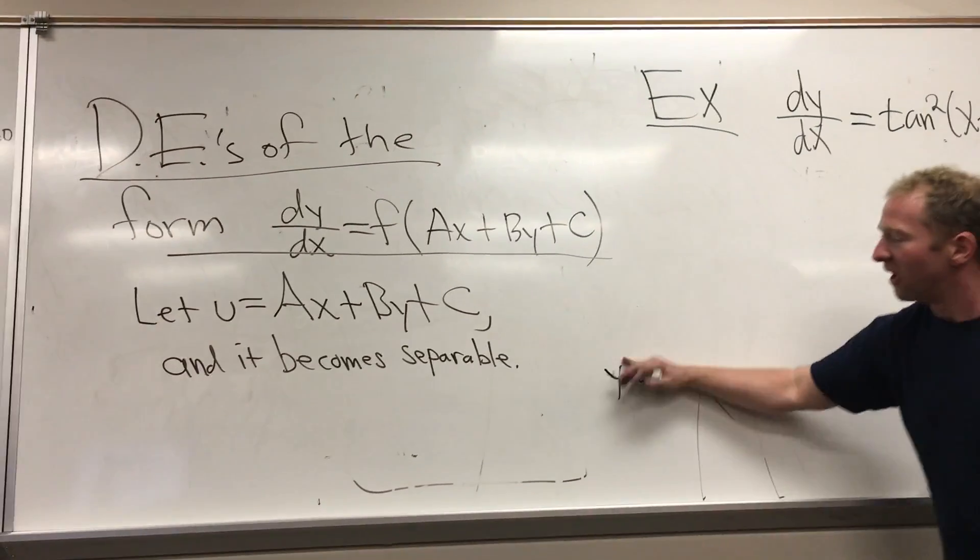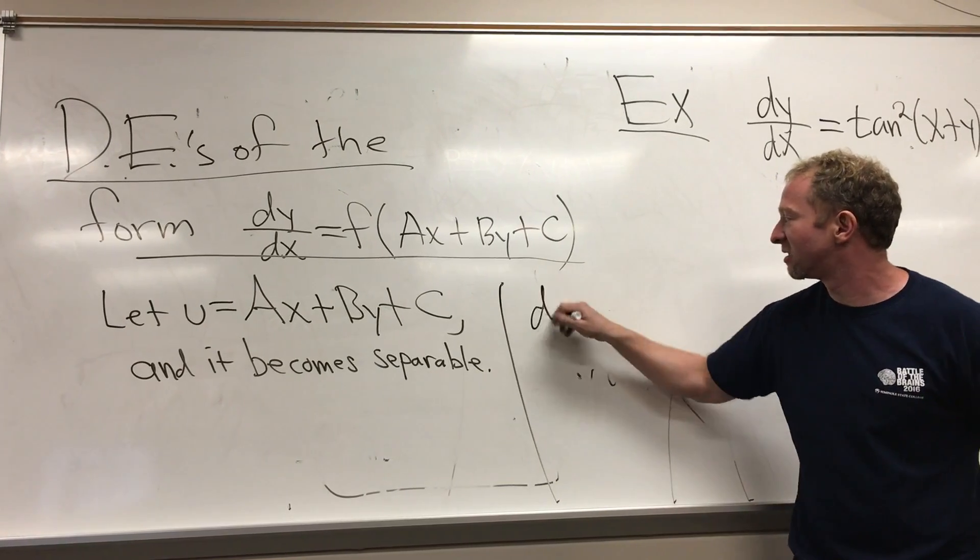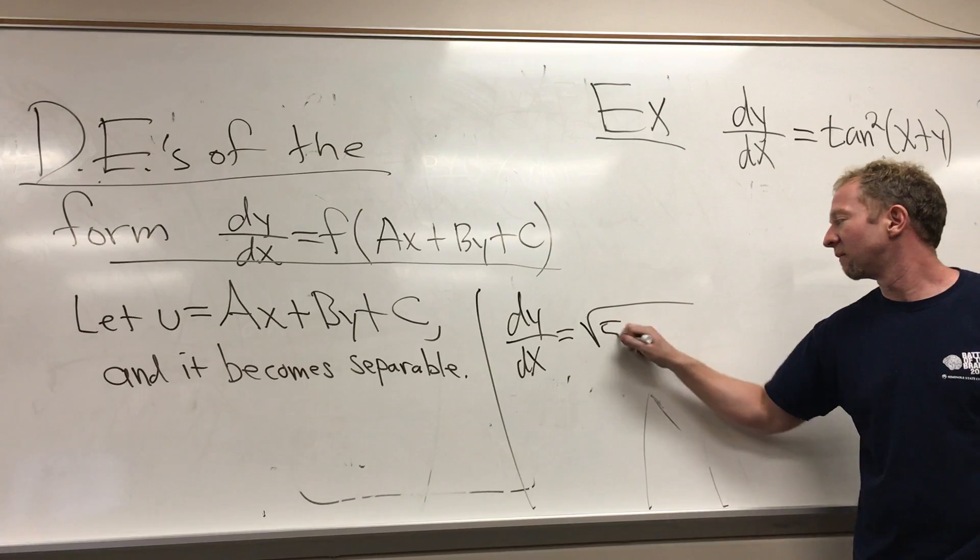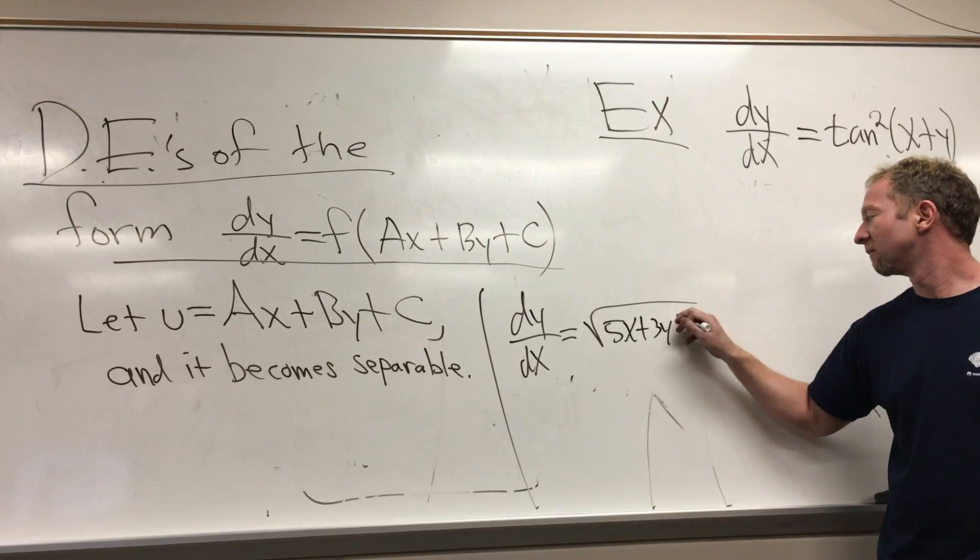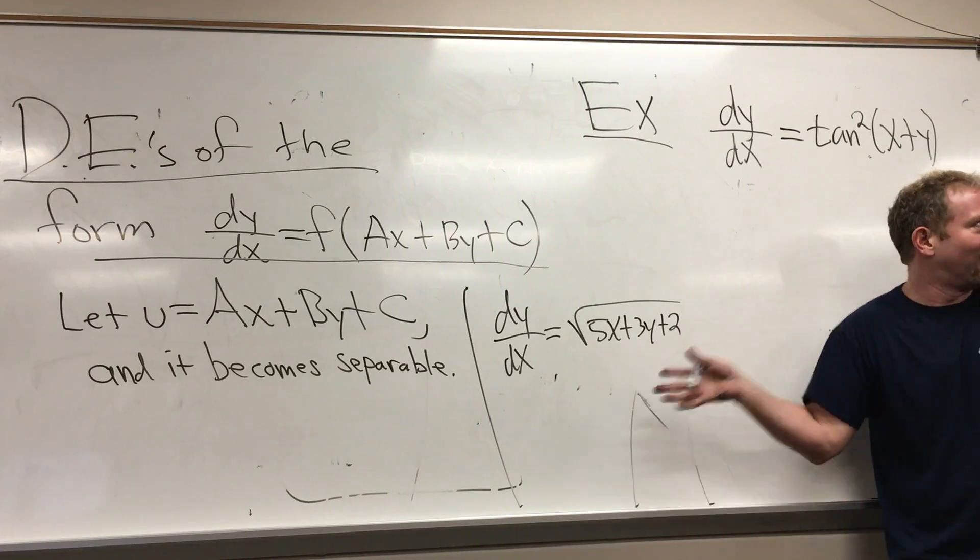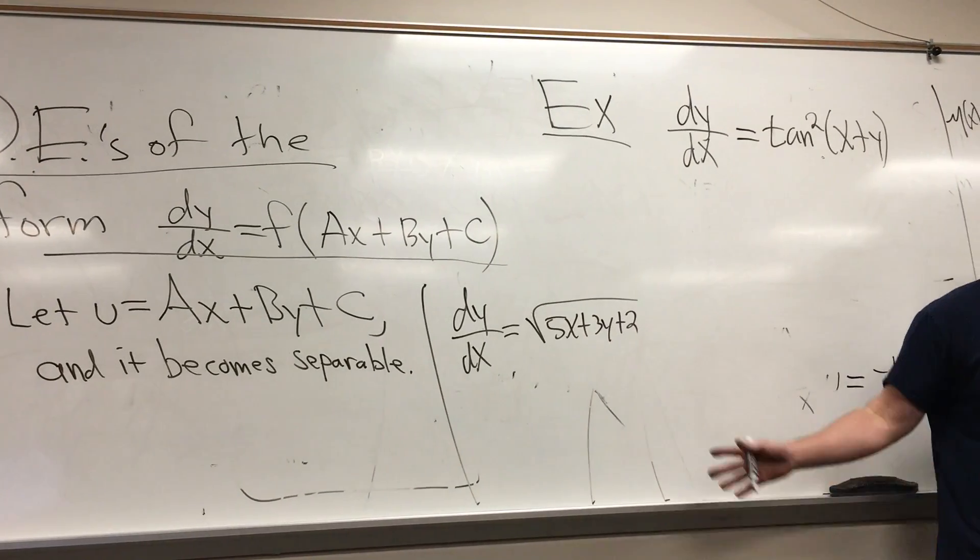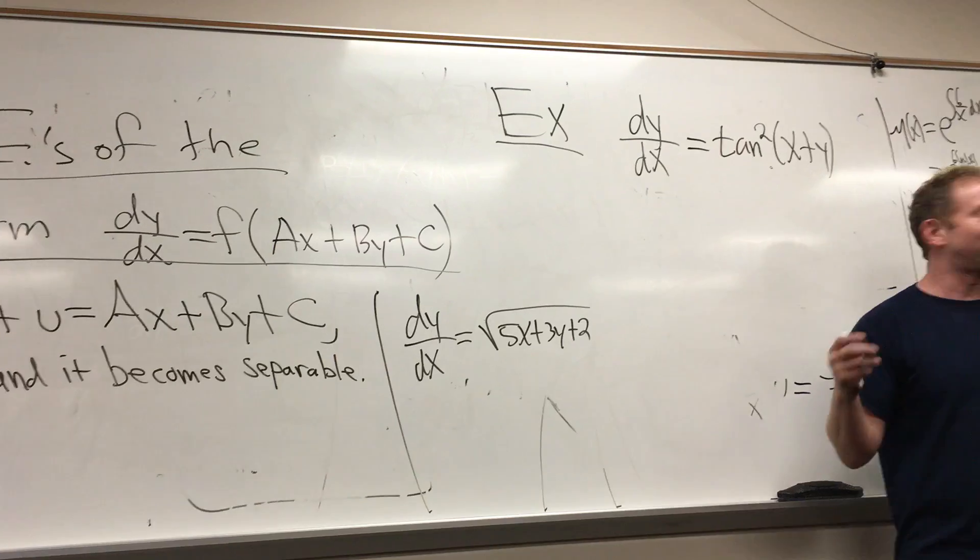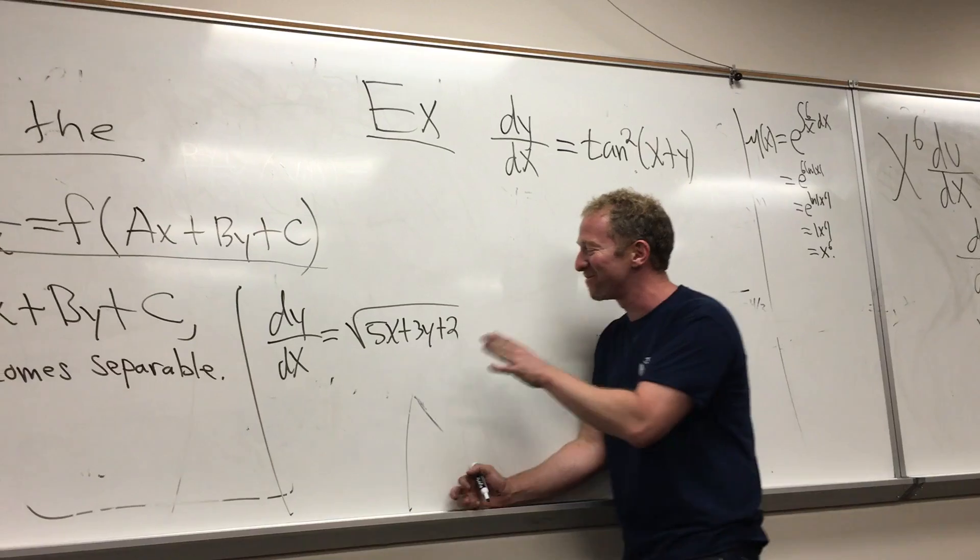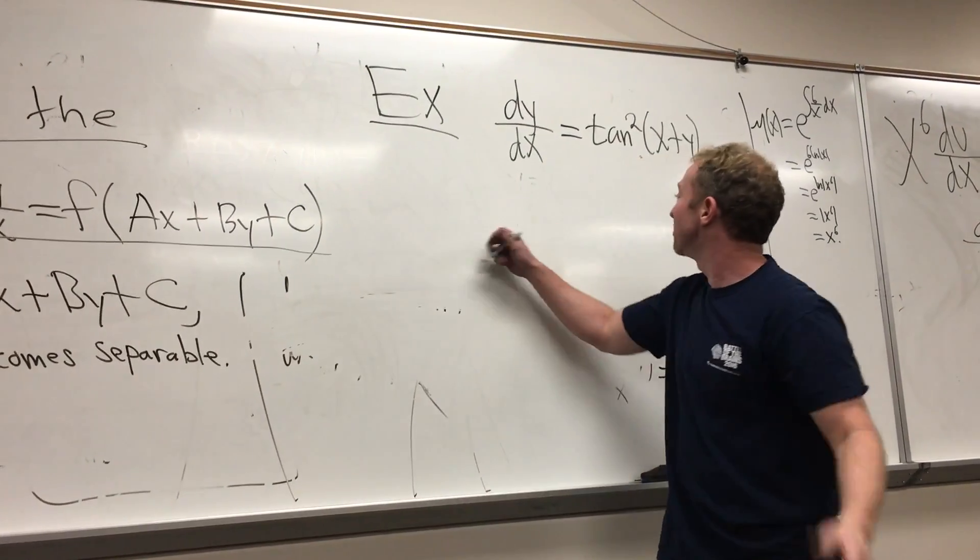I mean, if you see something like this on the test, what's your U going to be? Yeah, what's under the radical? I mean, so it's really obvious, right? So again, this is another, it's a mercy, not a mercy problem, but it's another, it's a freebie, freebie problem. Alright, so let's try this.